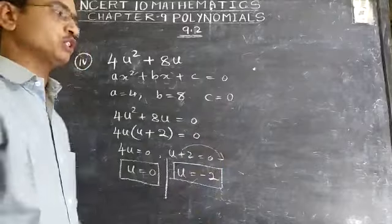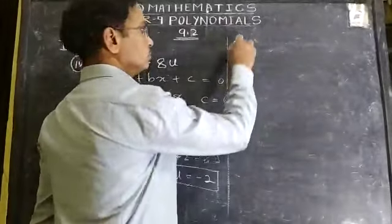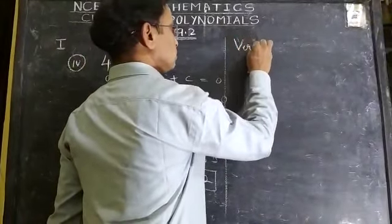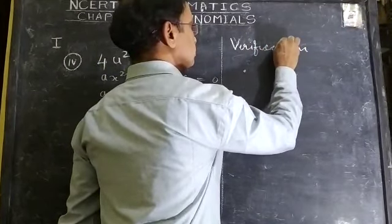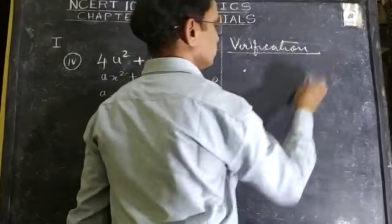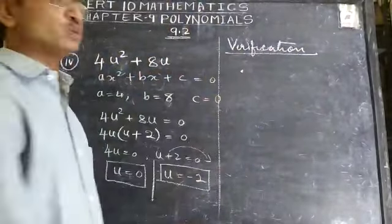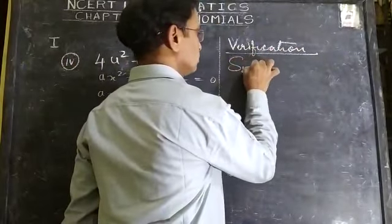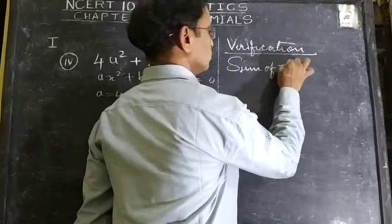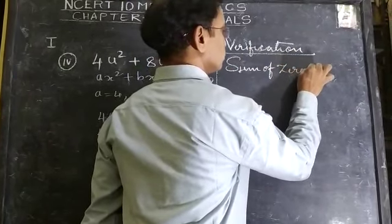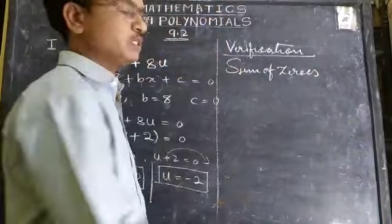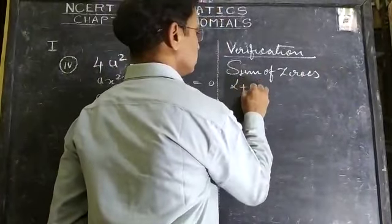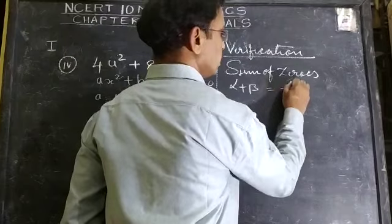Now we will go to the verification. Sum of zeros: α + β = -b/a. This is the formula.